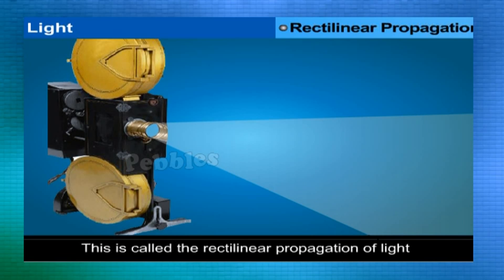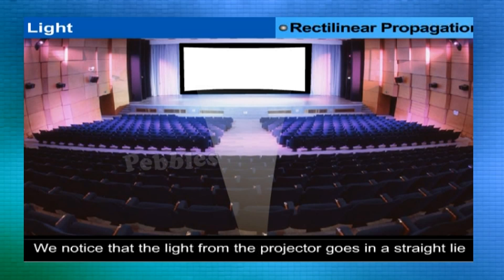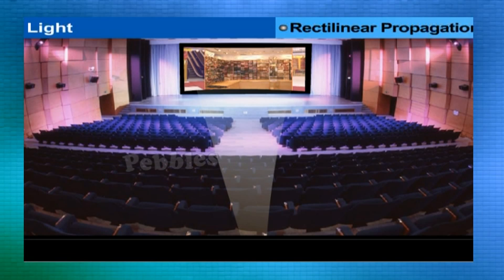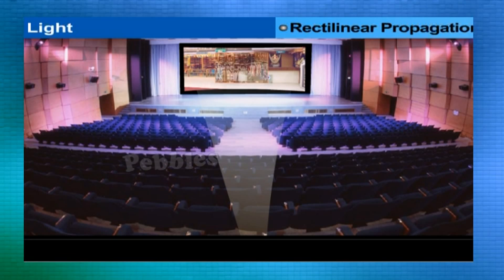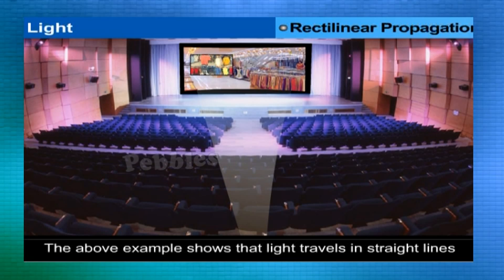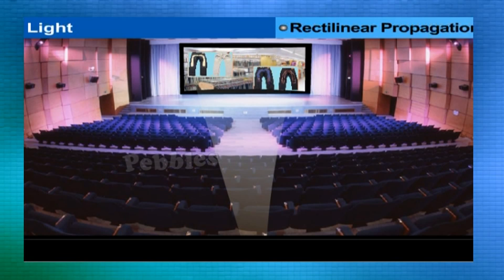Light travels in a straight line — this is called the rectilinear propagation of light. While seeing a film in a cinema hall, you may have noticed that the light from the projector appears to go in a straight line towards the screen. What you see is not light itself, but innumerable dust particles in the path of light which become visible when light falls on them. This shows that light travels in straight lines.